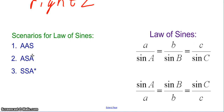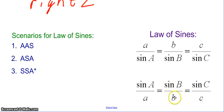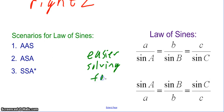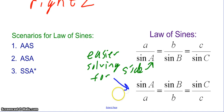Angle-angle-side and angle-side-angle we'll look at first. The law of sines gives us a ratio — an equation to represent the ratios between a side and the sine of its corresponding angle. So we know side a over sine A equals side b over sine B equals side c over sine C. We can also take the reciprocal. The first form is easier when solving for a side, and the reciprocal form is easier when solving for an angle.